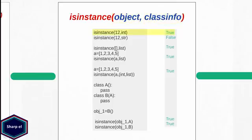In my first example I am checking if integer object 12 is an instance of class integer, which is true. In my next example I am checking if integer object 12 is an instance of class string, which is false. Similarly, I am checking if an empty list and a list with 5 elements is an instance of class list.